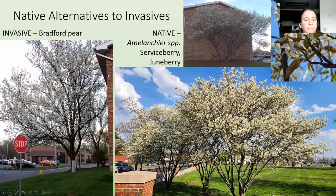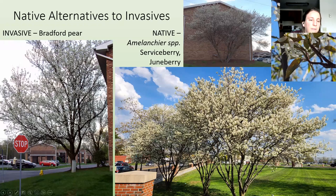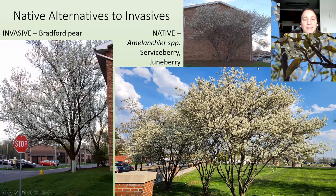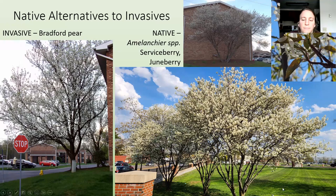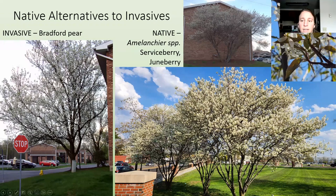For native alternatives to invasives: Bradford pear is a commonly planted plant that's definitely invasive — you can see it even driving down the highway coming into the wild. Instead, you can plant a native serviceberry or Juneberry. Some species are shorter and some can go 20 to 25 feet tall, so make sure you're getting the right one for your space. They're a beautiful native flowering tree or small tree with edible fruit.